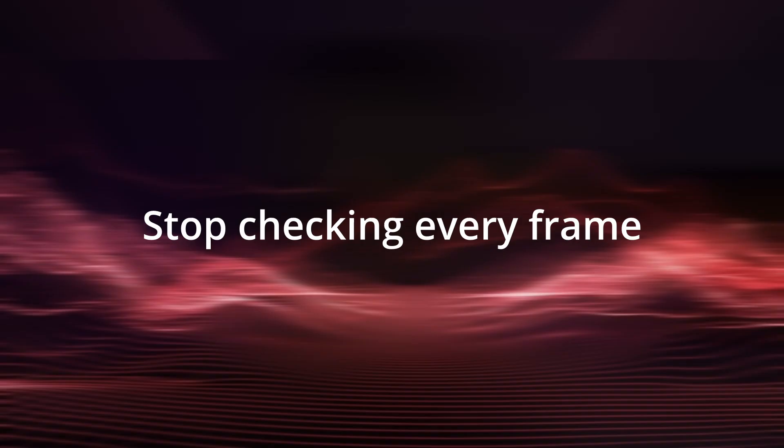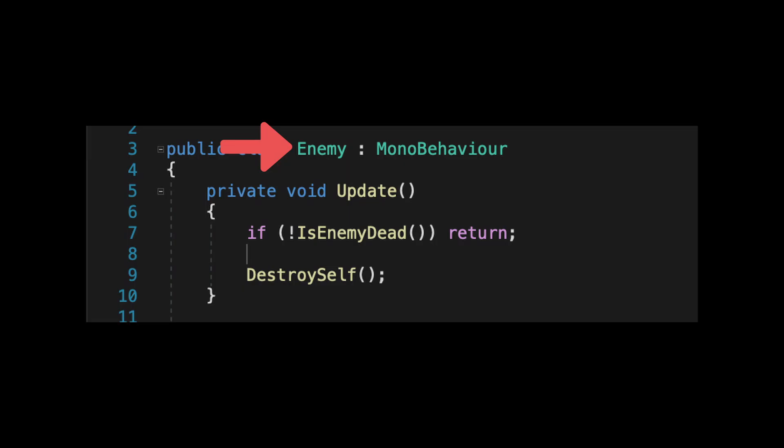I'm going to guide you through some points of what you could be doing wrong and provide you with some alternatives. Recently, a friend of mine reached out to help him with his code. He showed me this class of enemy where he checks whether the enemy is dead or not. If it's true, it proceeds to destroy the enemy game object; if it's not true, it returns out of the method. The only problem with his approach is that he is doing all of this in an update loop.